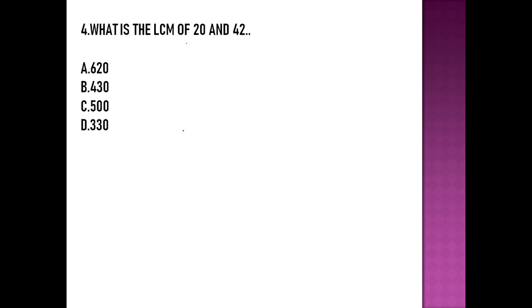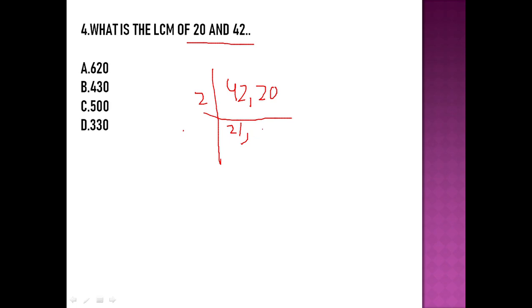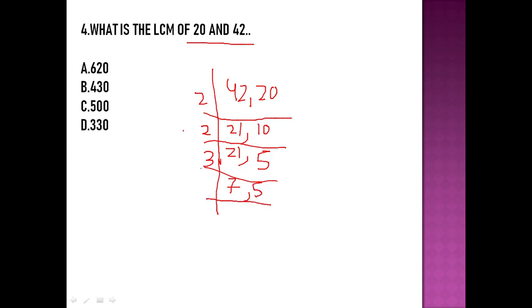Moving to question number four: find the LCM of 40, 42, and 20. We know how to find the LCM. We divide: 2 times 21 is 42, 2 times 20 is 40, 10 times 2 is 20. 21 cannot be divided by 2, so we write 21 as it is, and continue dividing.